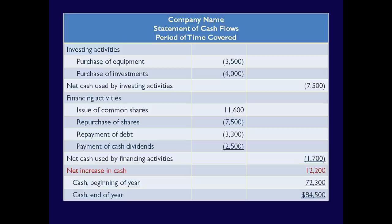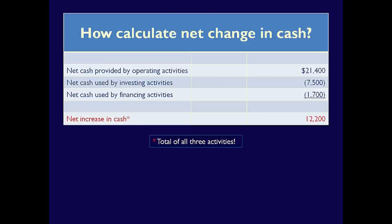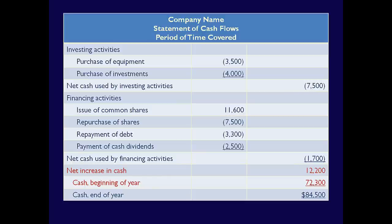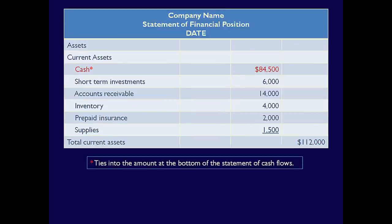The bottom of the cash flow statement shows the net change in cash, which is a summation of all three activities. Operating inflow of $21,400, and investing and financing outflows of $7,500 and $1,700 respectively. The net increase in cash was therefore $12,200. Add this to the beginning cash balance of $72,300 and we get the ending cash balance of $84,500. This amount is the cash balance on the Statement of Financial Position under current assets – the interconnection between the two statements.